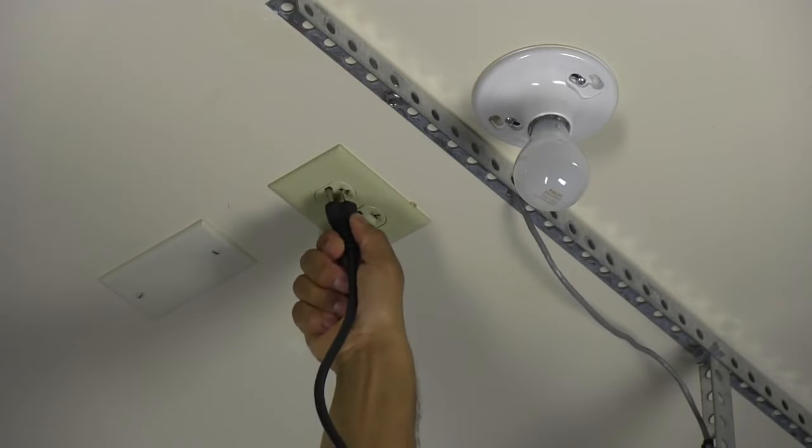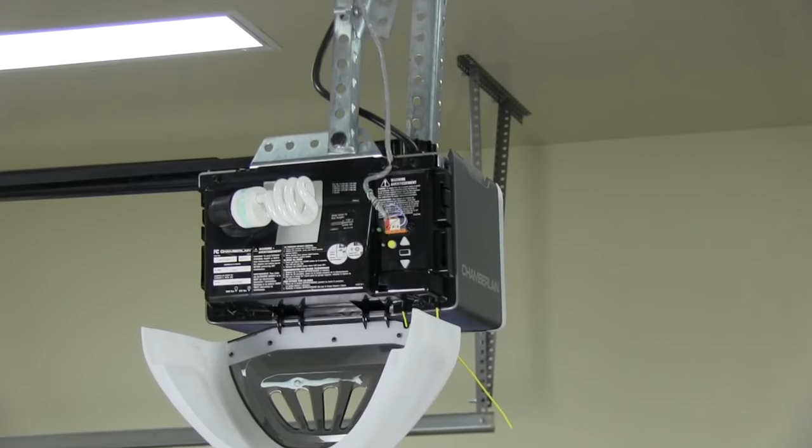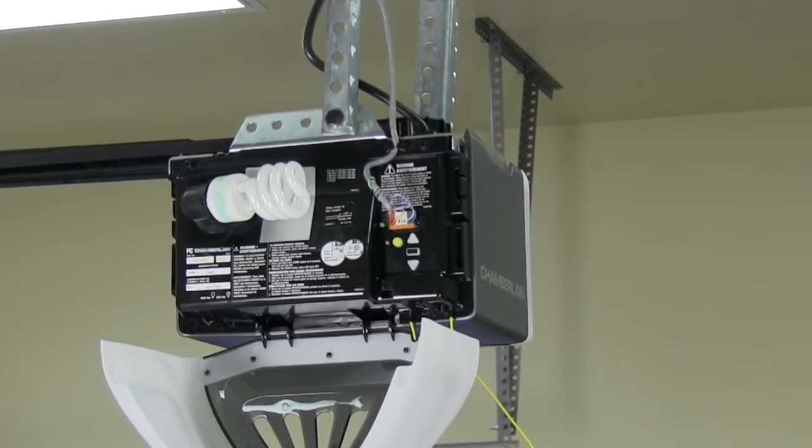Plug in the garage door opener. The battery status LED on the garage door opener will blink green, indicating the battery is charging.